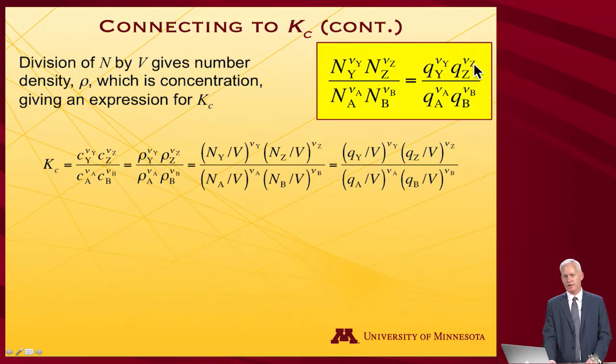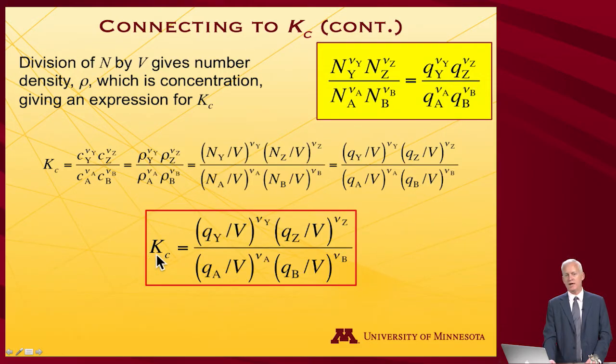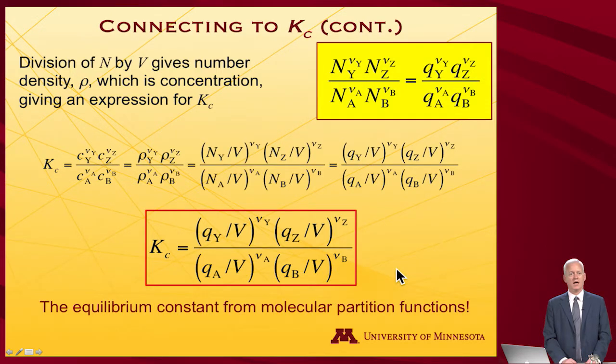So Kc is equal to the partition function of Y divided by the total volume raised to the stoichiometric power associated with Y, et cetera, for Z, divided by that for A, divided by that for B. And oh my gosh, that's the equilibrium constant from molecular partition functions.